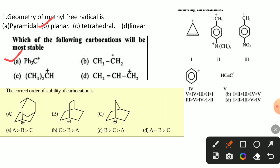In the third question, the correct order of stability of carbocations — carbocations are planar geometry and sp2 hybridized at the positive charged carbon. In the case of bridged carbocations, it is difficult to obtain a planar structure, so bridged carbocations are highly unstable. Among these three bridged carbocations, the adamantyl carbocation has a larger ring size, the barrelyl carbocation has another larger ring, and the norbornyl carbocation is smaller in ring size.